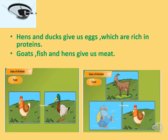Hens and ducks give us eggs, which are rich in protein. Goat, fish and hen give us meat. The meat of a goat is known as mutton, whereas the meat of the hen is known as chicken. Some people eat fish also.